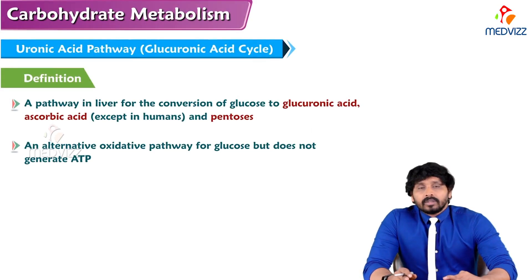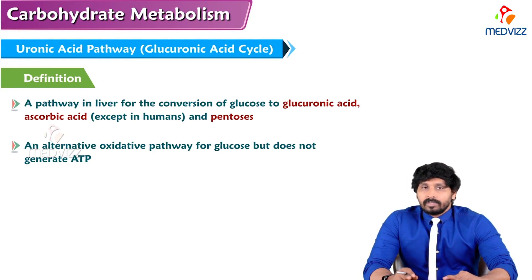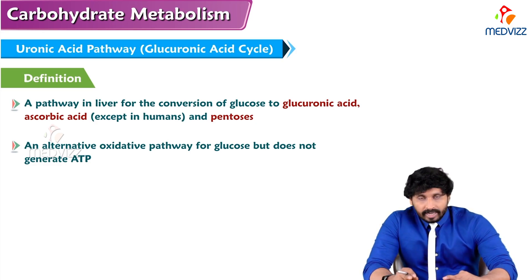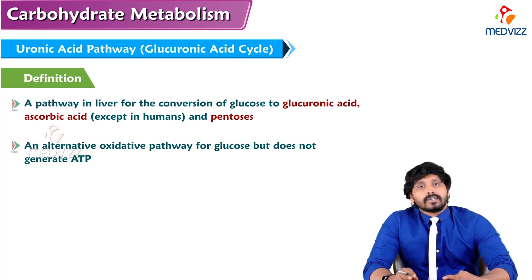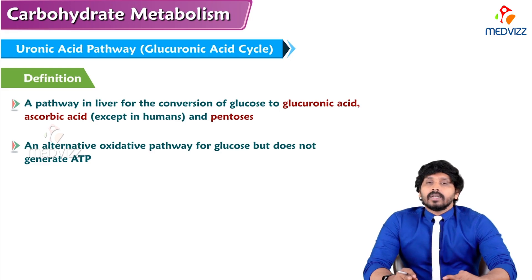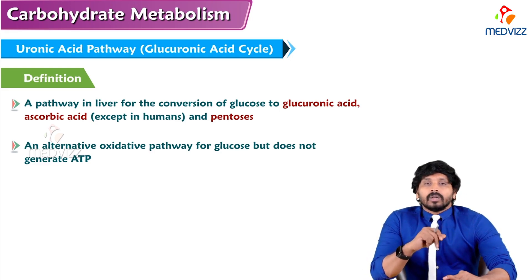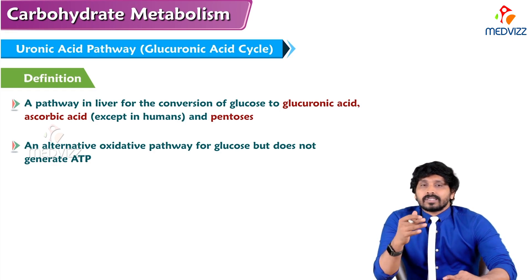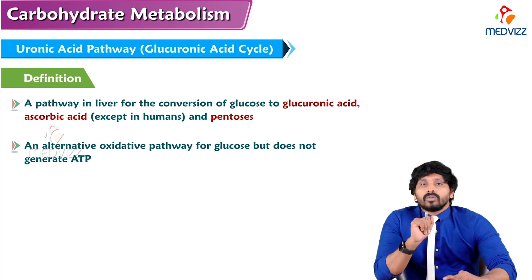Hello everyone, Dr. Suresh here. In this video we will be talking about the minor metabolic pathways of carbohydrates. One among such is the uronic acid pathway, which is useful in making glucuronic acid. We are all aware of the use of glucuronic acid in the liver. Along with glucuronic acid, except in humans, this uronic acid pathway is also able to synthesize ascorbic acid in lower animals like primates.